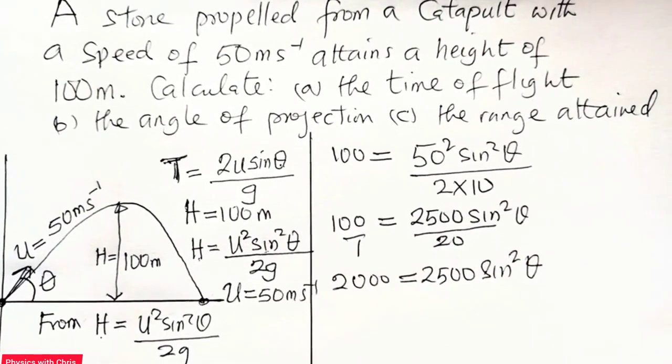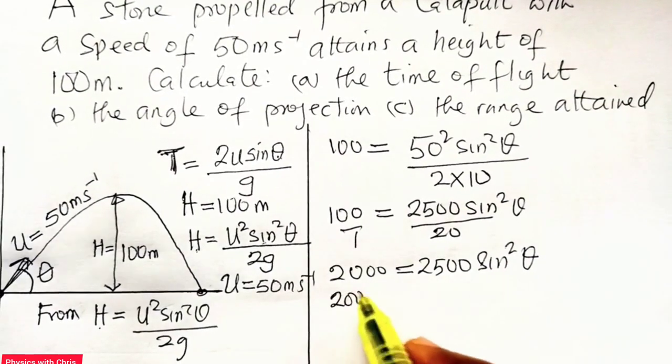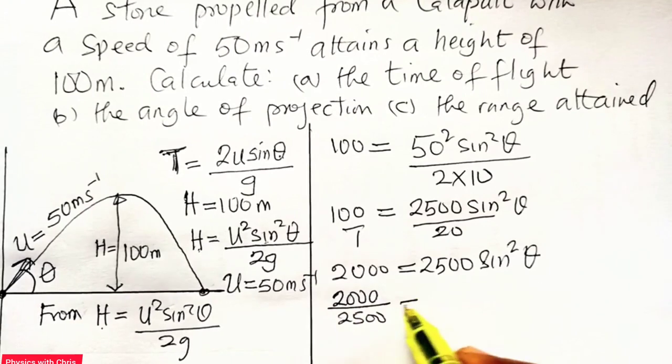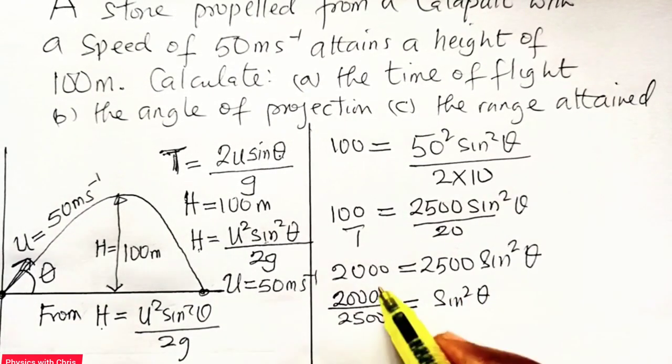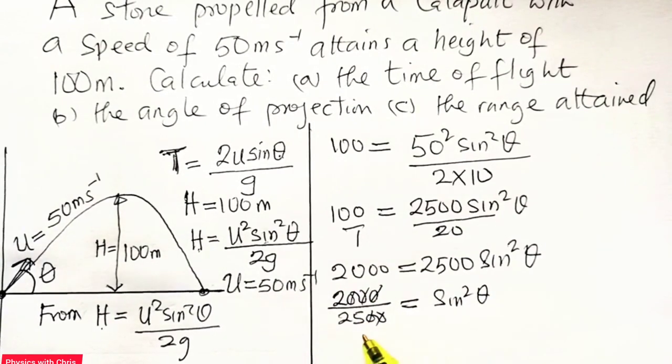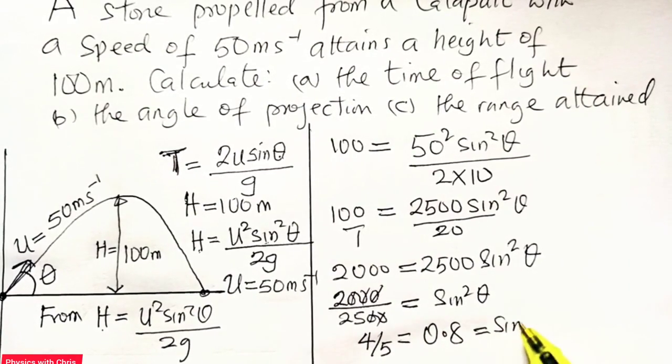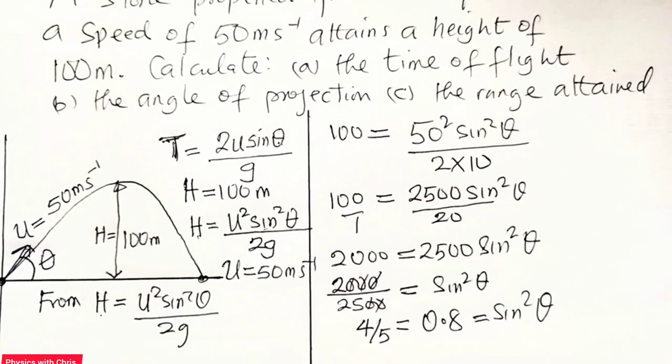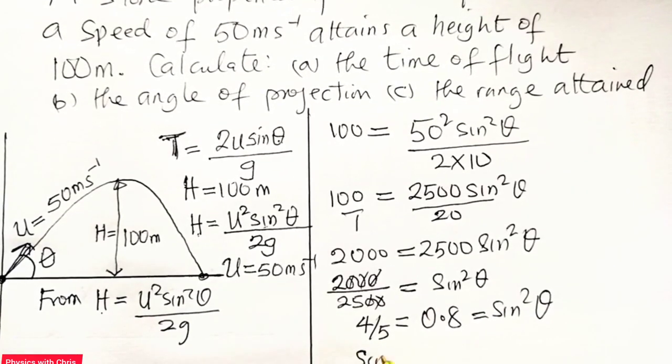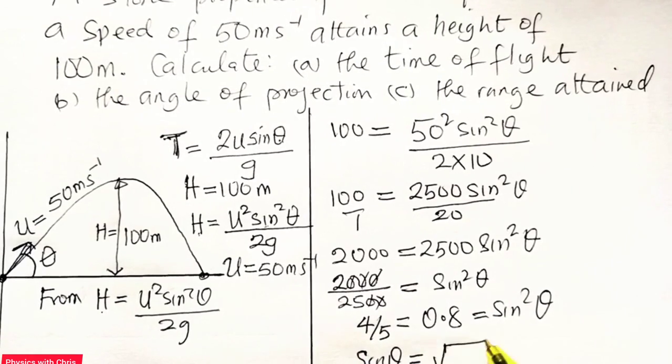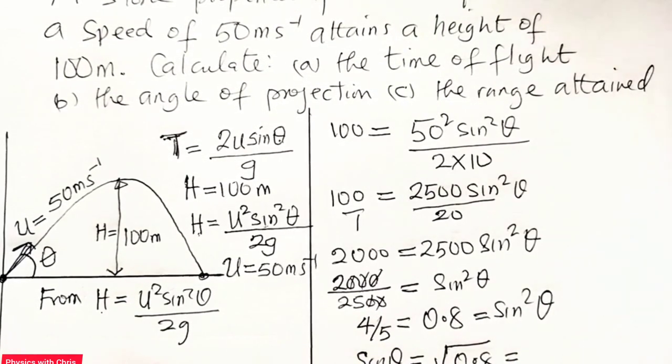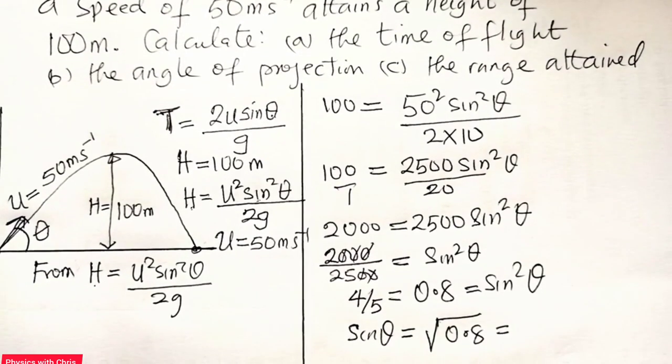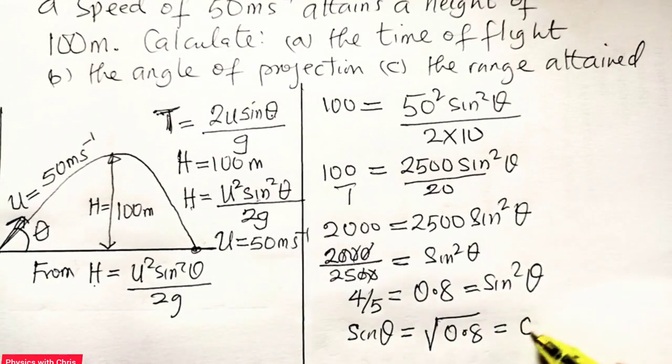So when I divide both sides by 2500, I'm going to have 2000 divided by 2500 equals sine squared theta. So when I divide this by this, I'm going to have 4 over 5, which is 0.8 equals sine squared theta. First of all, I need to find theta. I have to take the square root of both sides, so that sine theta, taking square root of both sides, gives me square root of 0.8. So that is what we do here in order for us to find the value of sine theta. When I take the square root of 0.8, it gives me 0.89.